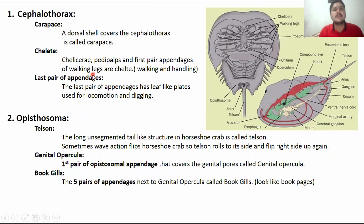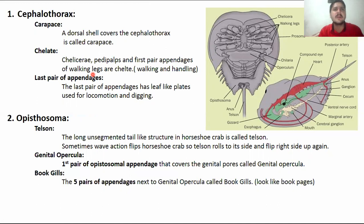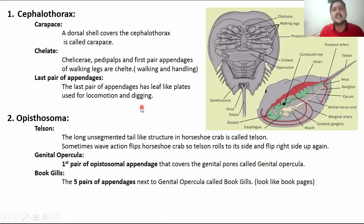The chelitae are basically a combination of chelicerae, pedipalps, and the first pair of appendages, collectively called chelitae. They provide a role in handling the prey or food and are also involved in walking. The last pair of appendages shows leaf-like plates involved in locomotion and digging in sandy regions.